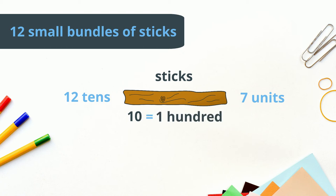We know ten small bundles are equal to one hundred. So it means we have one hundred sticks. Then the two leftover bundles make two tens, and seven separate sticks make seven units.